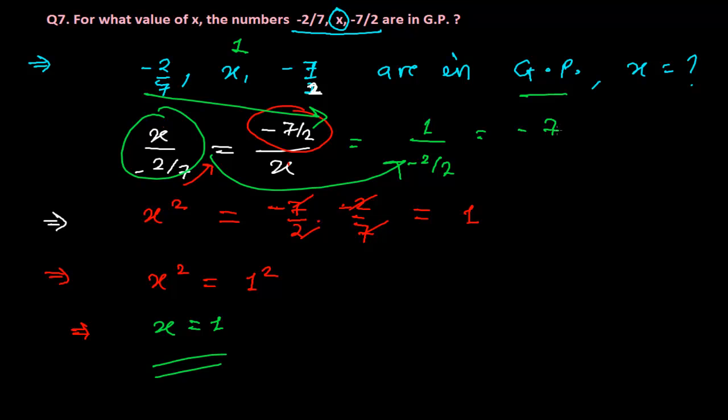This part will be minus 7 by 2, which is again equal with this part. This is actually minus 7 by 2 divided by 1, that is minus 7 by 2. Both where we get the same thing means r is constant, means this is the GP.